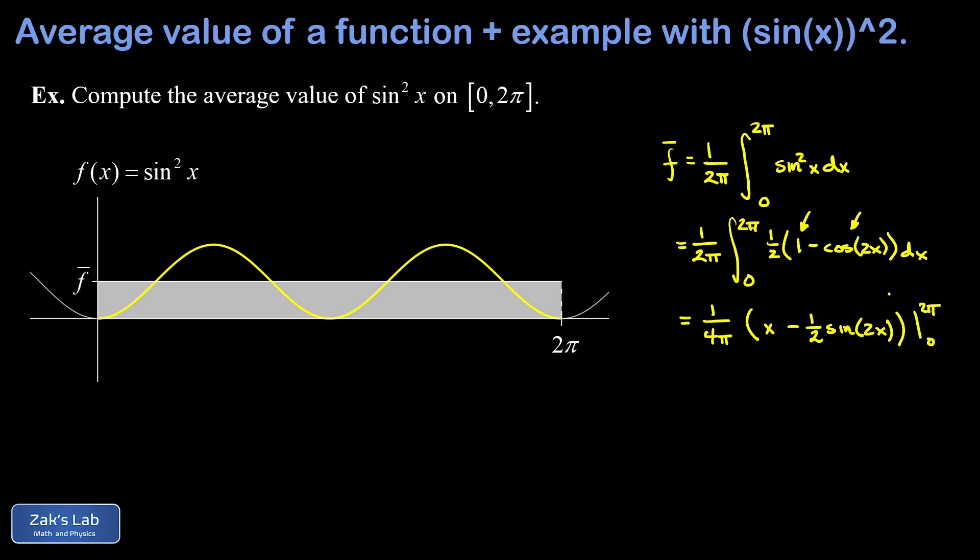Now a really nice thing happens when we evaluate across the limits of integration. I notice in this sine term that when I sub in the upper limit I get the sine of 4π, and that's just zero. Then I sub in the lower limit and I get the sine of zero, which is zero, so both the upper and lower limits give me zero for that term and I don't have to worry about it.